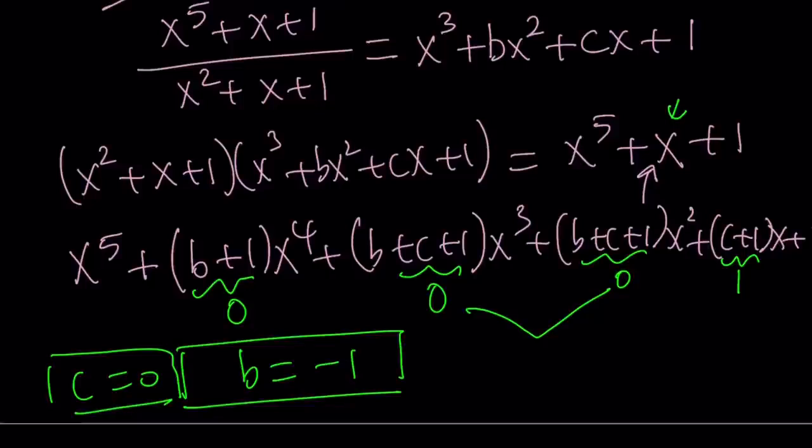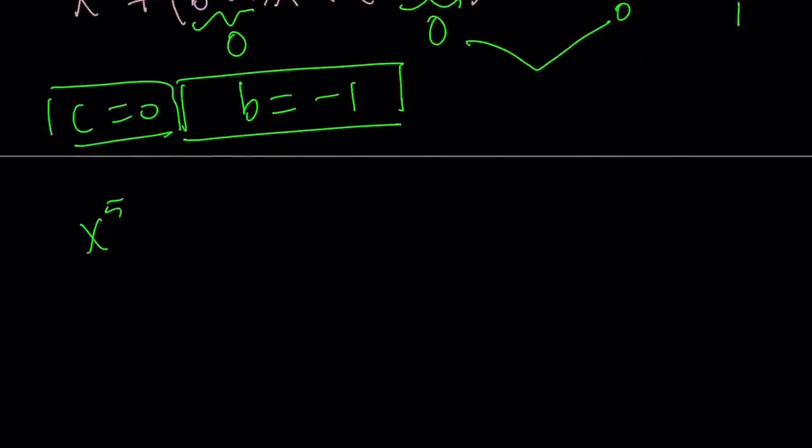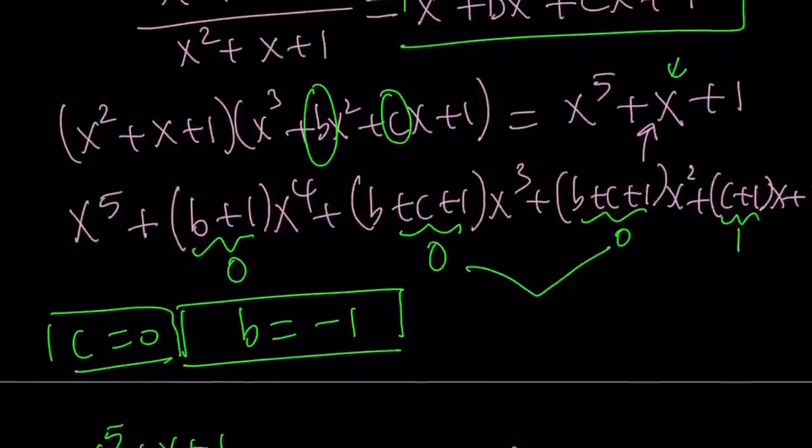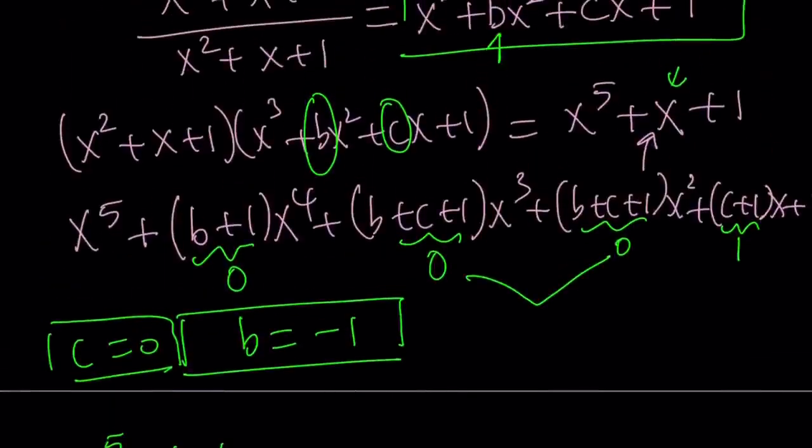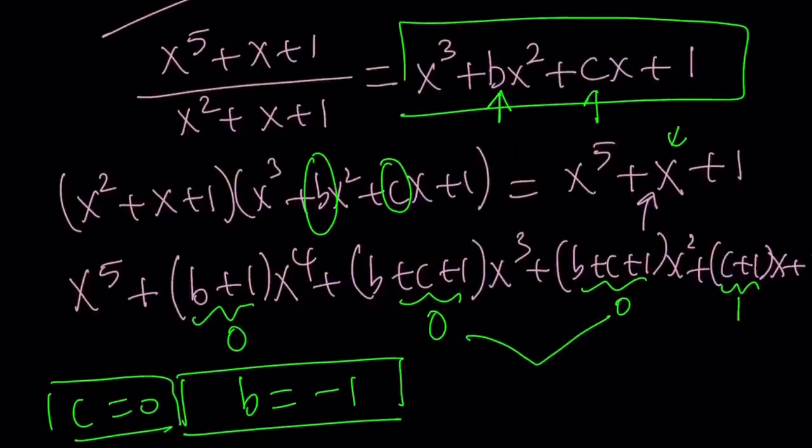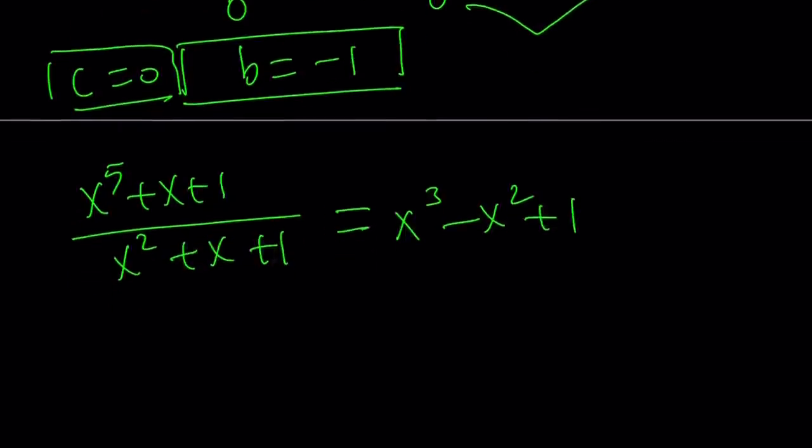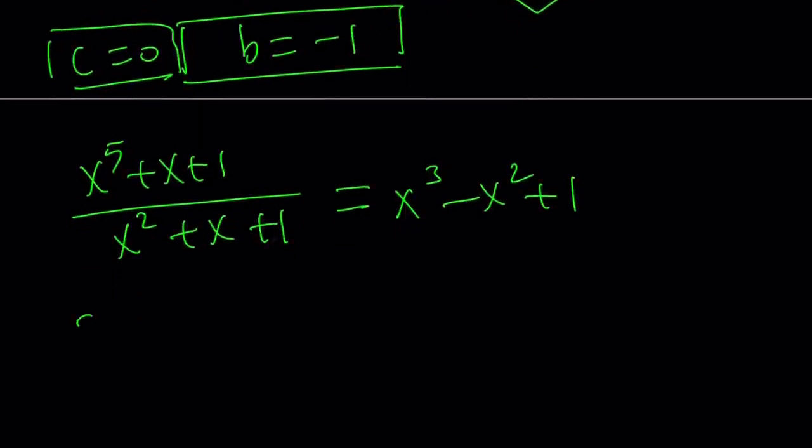Great. So we only needed to find b and c from here. Now, we can go ahead and plug it in and find the answer. So the quotient, when we divide x to the fifth plus x plus one by x squared plus x plus one, it is supposed to be x cubed minus x squared plus one. Because b is negative one, it's going to go here, and c is zero, and that's going to go here. Awesome. This brings us to the end of the second method and the beginning of the third method.